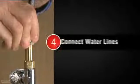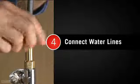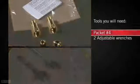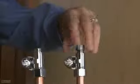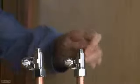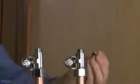The next step is to connect the water lines. For this step, you'll need packet 4 from the box and 2 adjustable wrenches. Remove the check valves and ferrules from the bag and install these onto the supply stops. If ferrules and nuts are already present on the stops, remove them and use the ones provided with the faucet. The check valves and ferrules that ship with your faucet are essential for the faucet to operate properly.